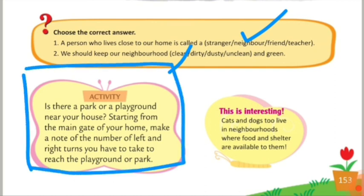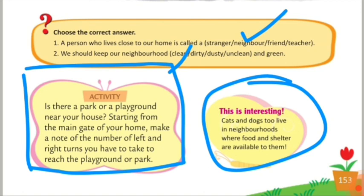Yeh ek activity hai. Is there a park or a playground near your house? Starting from the main gate of your home, make a note of the number of left and right turns you have to take to reach the playground or park. Aapko ghar se nikalte samay left ya right turns count karni hai. This is interesting. Cats and dogs also live in neighborhoods where food and shelter are available to them.